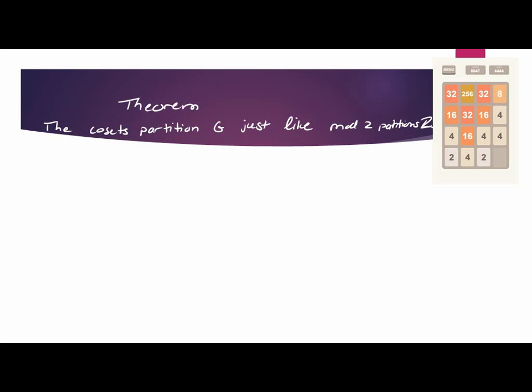This is the theorem that tells you that cosets partition G just like mod 2 partition Z. And it was actually Fraley's picture where I first understood the importance of the cosets, because he draws it pictorially and you see that you're really taking the original group and breaking it up into pieces, and these pieces are breaking it up exactly the way mod 2 breaks up Z. It's the same thing.